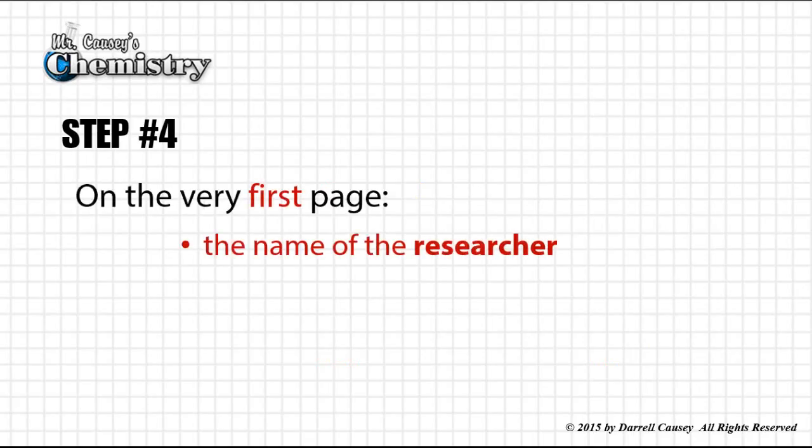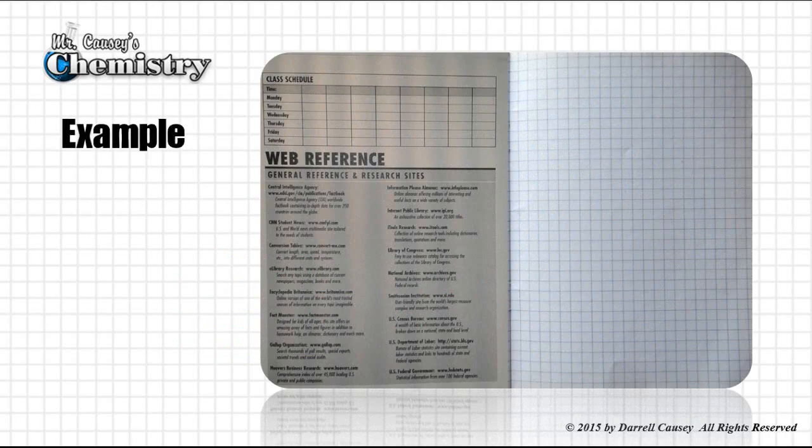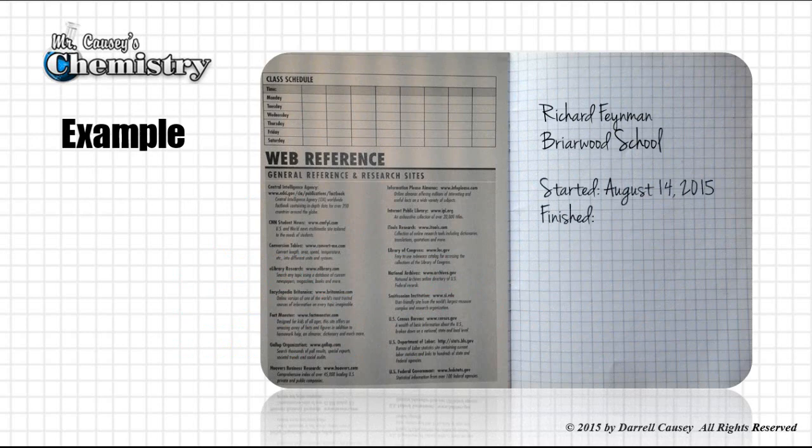Step number four, on the very first page, put the name of the researcher, that's you, the name of the institution, that would be your school, put the date the notebook was started and later when it was finished, and the contact information. Don't put your personal contact information, use the school's. Here's an example. Let's put in the name, then the school, and then let's put in when it was started, and we'll put for when it's going to be finished. Now let's go ahead and put the contact information. There you go.